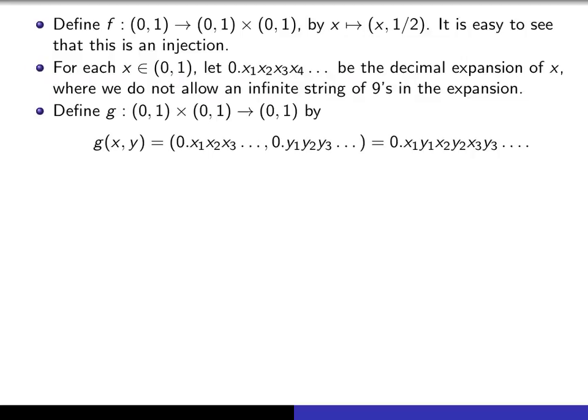Now here's the clever trick that we use. Given an ordered pair (x, y) in (0,1) × (0,1), we're going to represent, using this obvious notation, the decimal expansions of each of x and y, and what I'm going to do is I'm going to intersperse. I'm going to create a new decimal expansion by interspersing, alternately, the digits of each of the x's and y's.